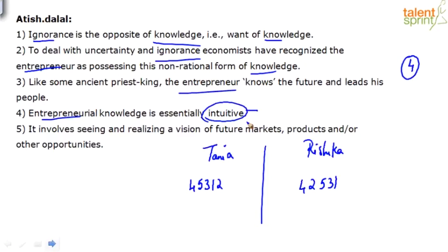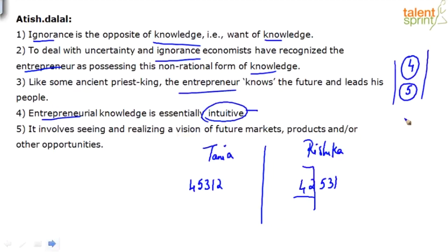Sentence five is the next sentence, expanding on that intuition: 'It involves seeing and realizing a vision of future markets, products, and/or other opportunities.' They're saying, 'I believe if I launch this product, maybe in the future it will gain traction and I'll do well — this is my vision.' So four and five is a confirmed link. Rishika, that link is incorrect for you.